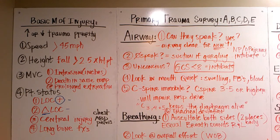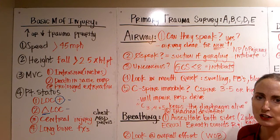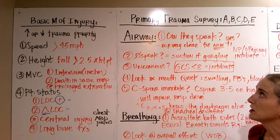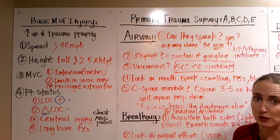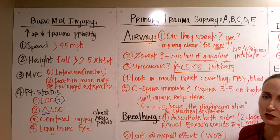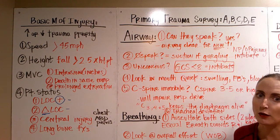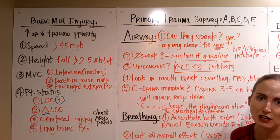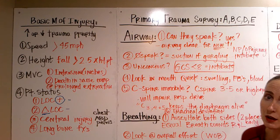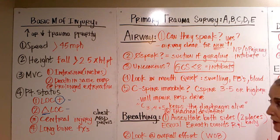Our primary trauma survey is A-B-C-D-E. The only thing we're trying to do is rule out life or limb threats — identify them, fix them, or at the very least rule them out. Everyone has every injury possible or imaginable until otherwise proven by imaging and our exam. Our primary trauma survey comes from TNCC, the Trauma Nurse Core Course, which you have to take to be an ER nurse.